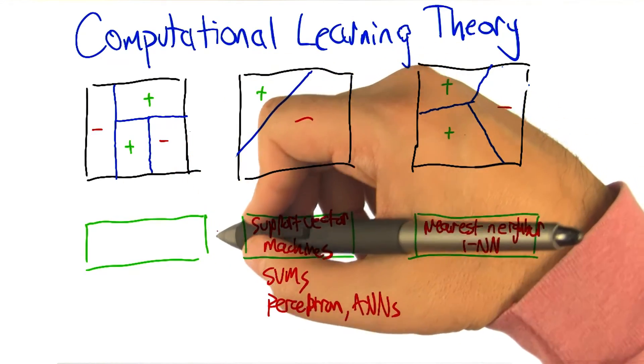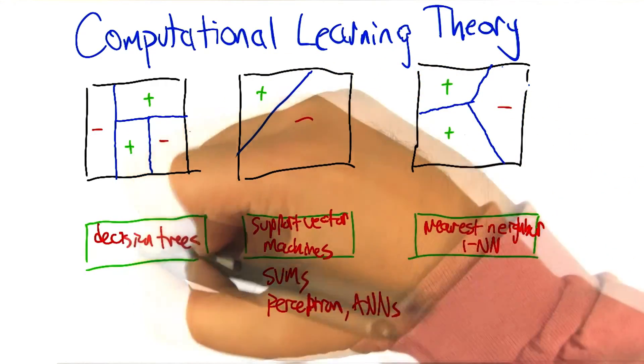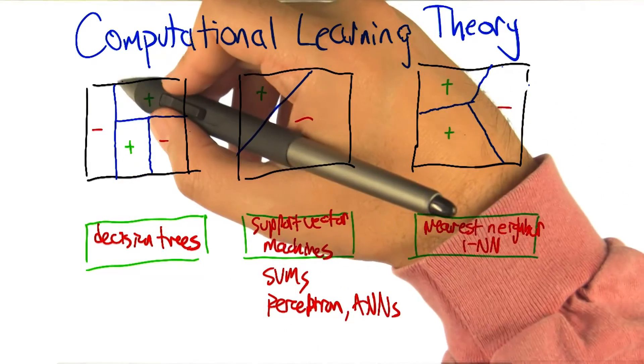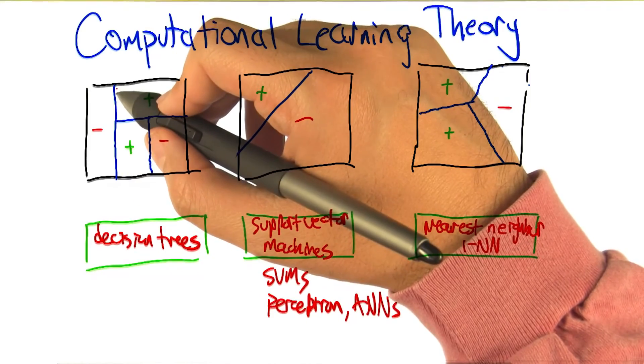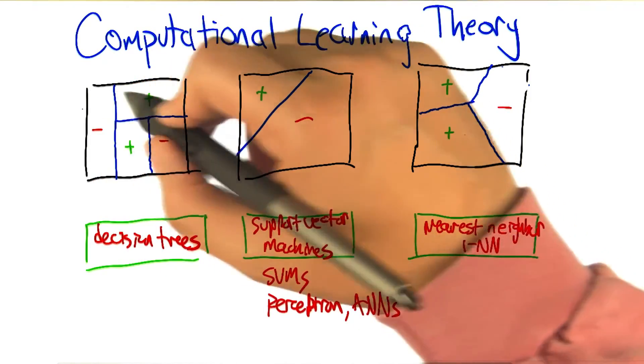Given that, I'm going to say the first one is decision trees. Ah, very good. Because decision trees split things—if you're talking about in a two-dimensional space, it's going to split at the top node in one dimension.